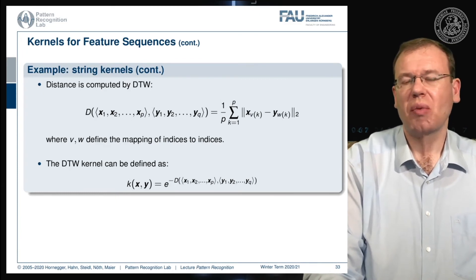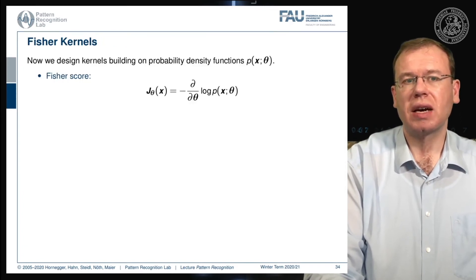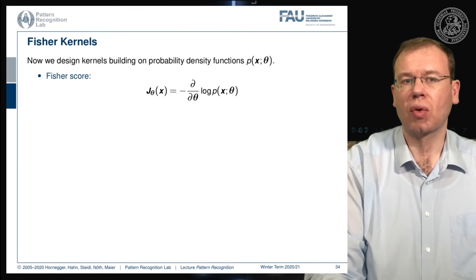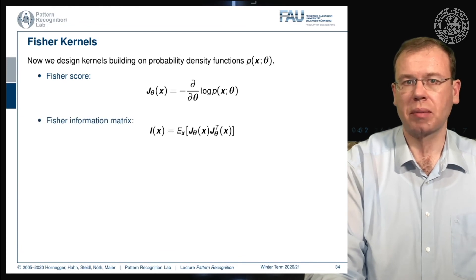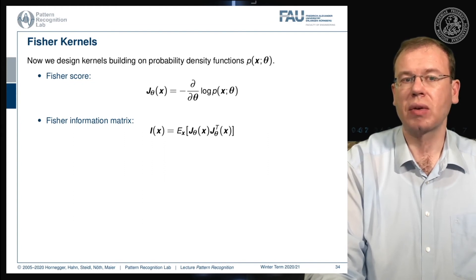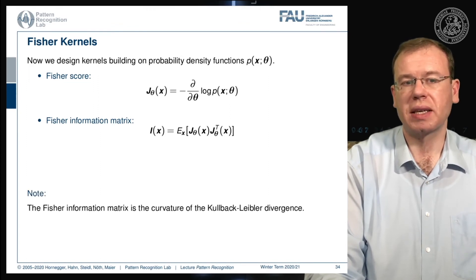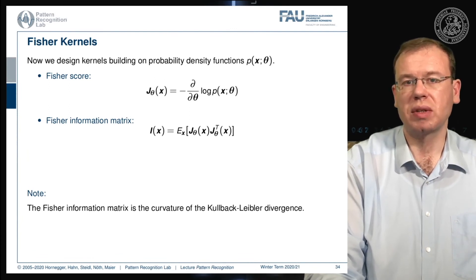Pretty cool. We can also look into the so-called Fischer kernel, which allows us to construct kernels for probability density functions. This uses the Fischer score — the negative partial derivative with respect to theta of the logarithm of the probability density function — which can be employed to compute the Fischer information matrix I of x, defined as the expected value of the Fischer scores times the Fischer scores transposed. This essentially describes the curvature of the Kullback-Leibler divergence, and both concepts can be used to define kernels.